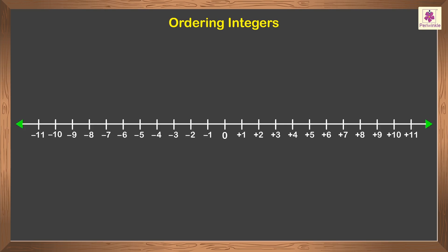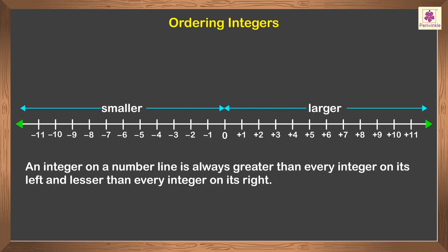Note the arrows at both ends of the number line. These tell us the direction in which the numbers are getting larger or smaller respectively. An integer on a number line is always greater than every integer on its left and lesser than every integer on its right. For example, negative 5 is smaller than negative 4.